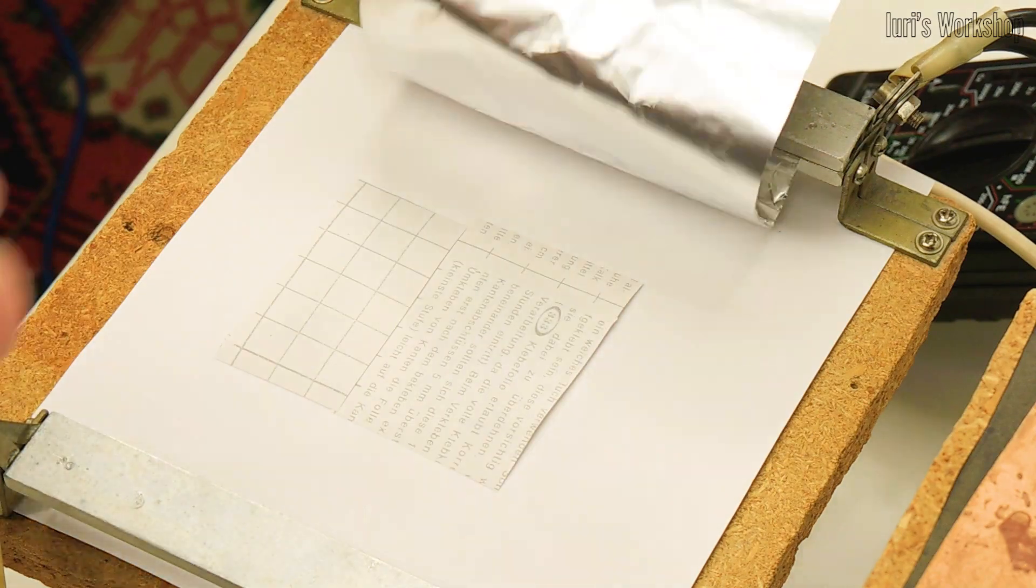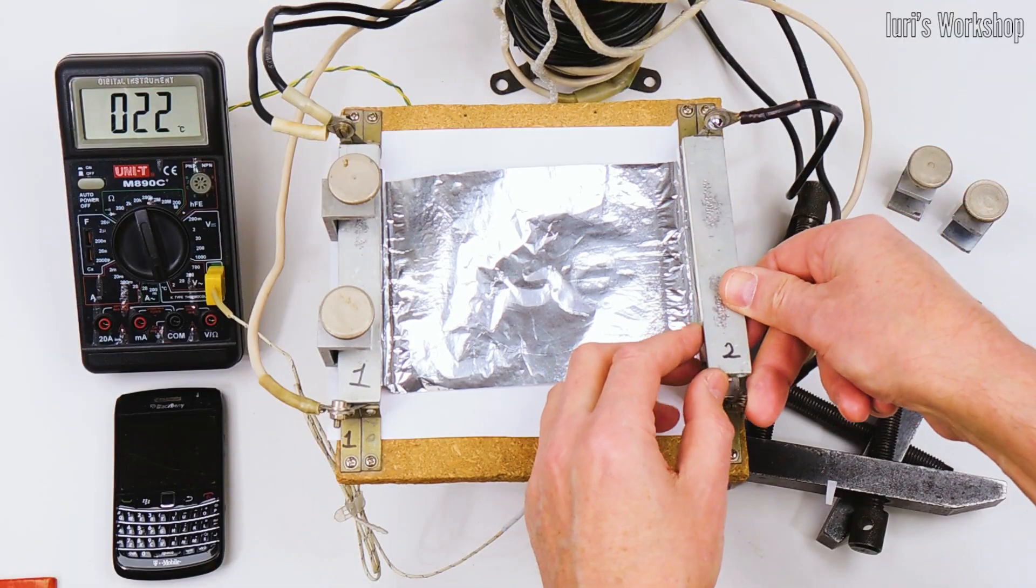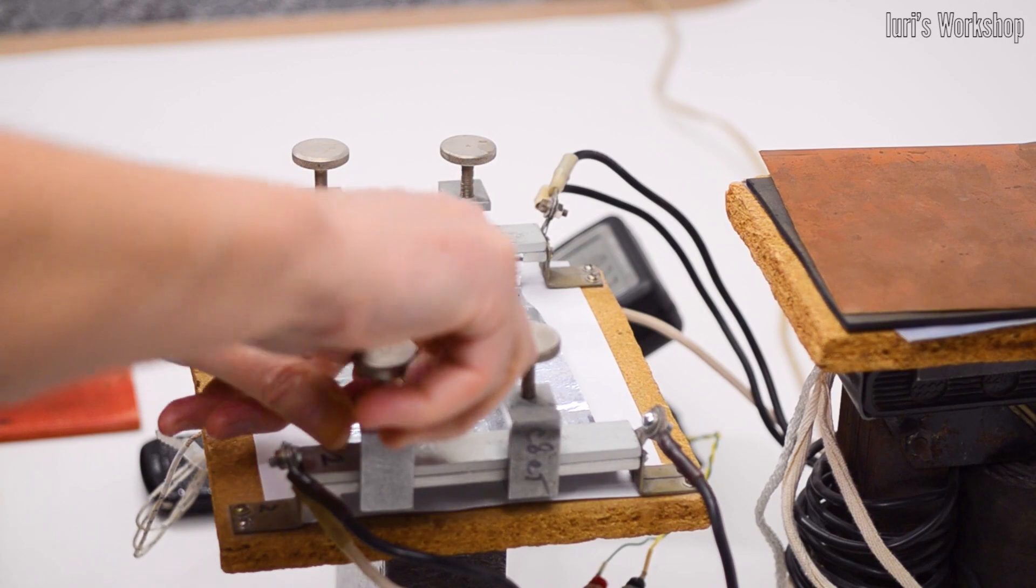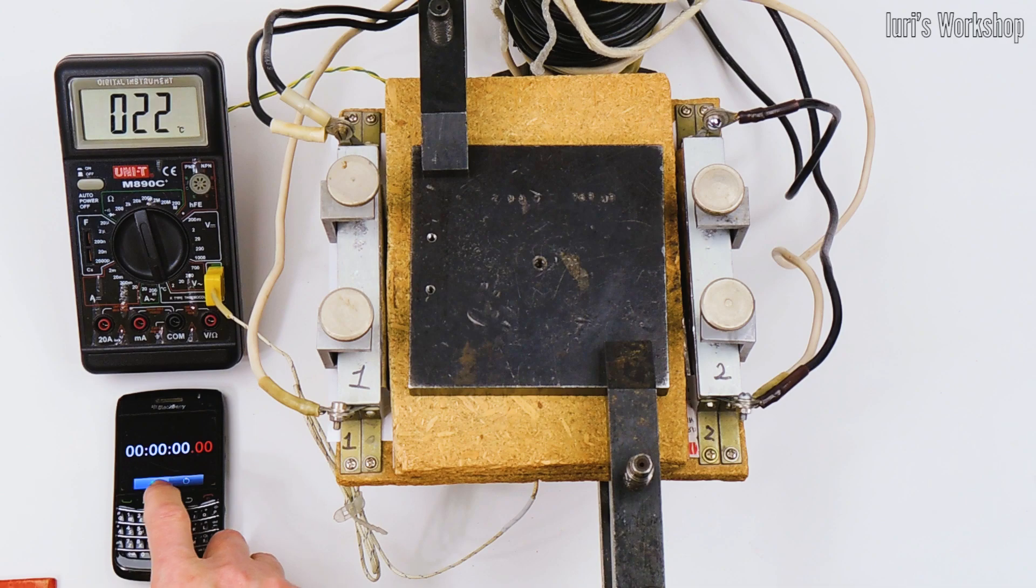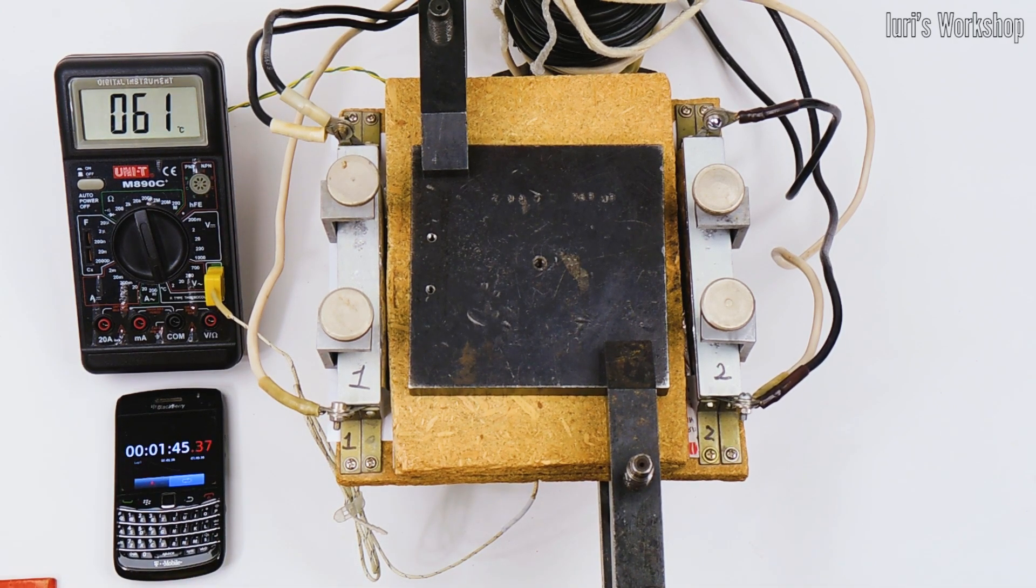Then I transferred the image onto a copper-clad PCB blank using a heat press. The heater in this heat press is aluminum foil.